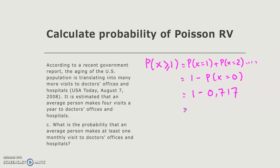So for at least one visit using your calculator, it would be 0.283.